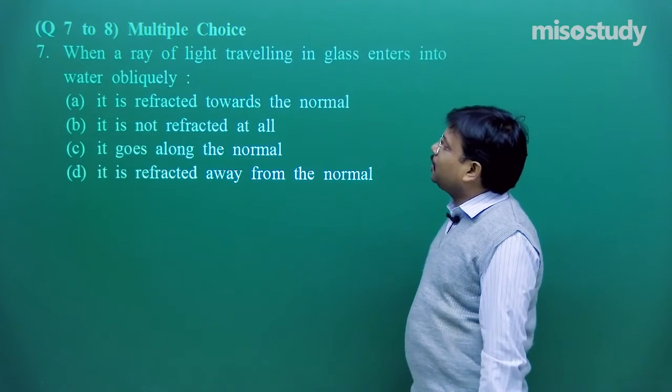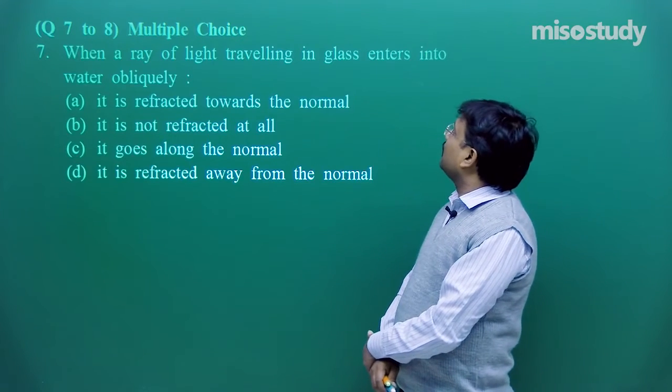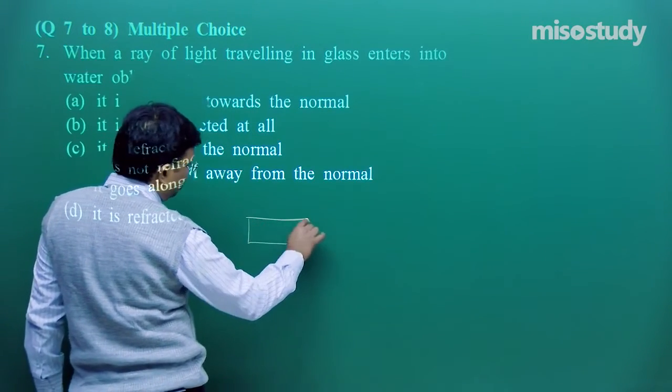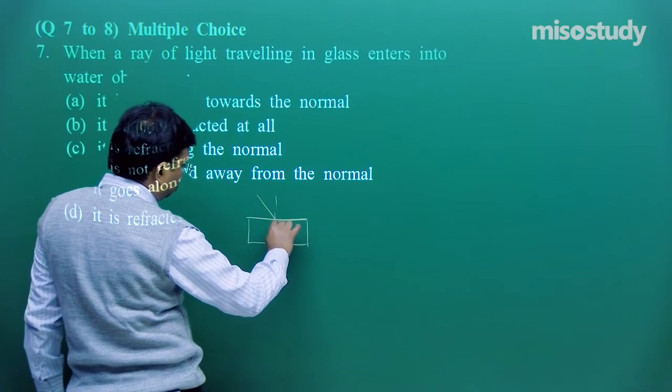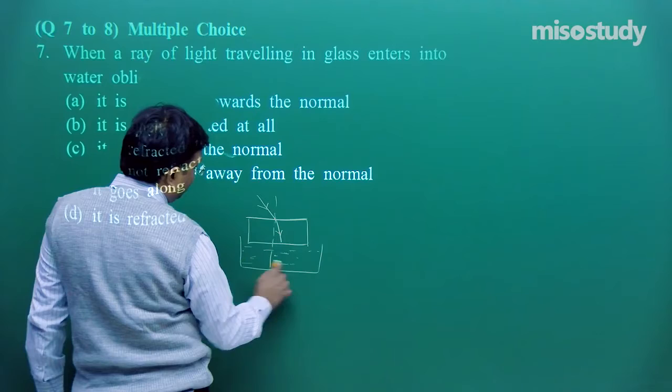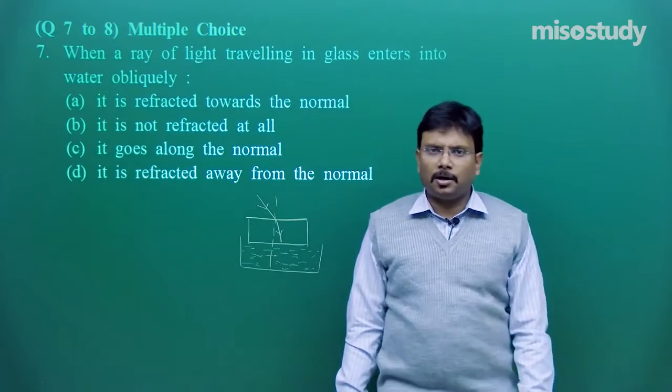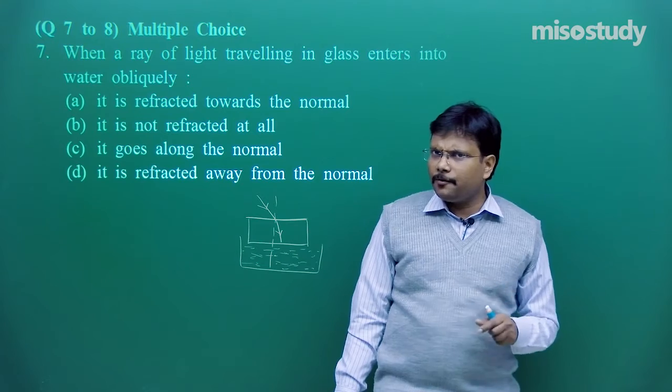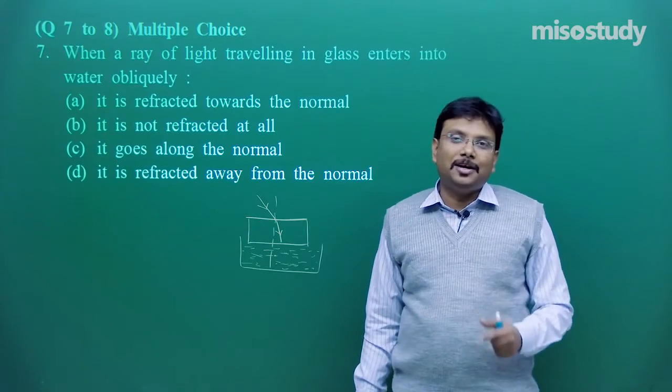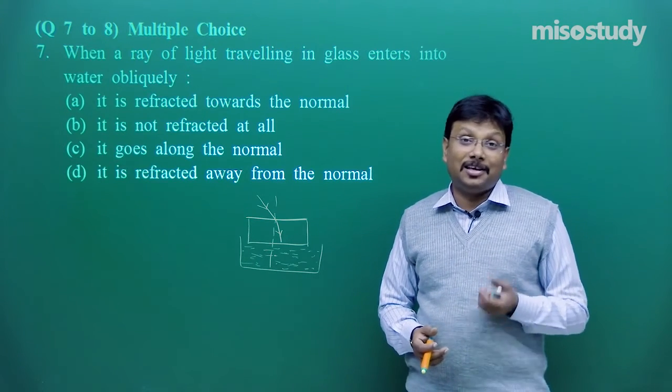Then comes question number 7 to 8 and these are multiple choice questions. Now, when a ray of light traveling in glass enters into water obliquely, then it is glass. Now, this glass object, you can say a glass slab is placed in water. So what will happen when it will enter into water? So going from denser to rarer, it will bend away from the normal, refracted away from the normal. This is the correct answer, because glass is more dense comparatively to water, simple. So I think this question is also a fit question to put in hots category, high order thinking skills.